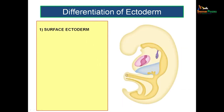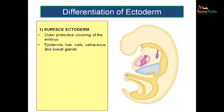Let us see what are the derivatives of surface ectoderm. Surface ectoderm gives rise to the epidermis, hair, nails, sebaceous and sweat glands, because this is actually forming a protective covering of the embryo. So all those structures which aid in the protection of the embryo will be derived from the surface ectoderm: the epidermis of the skin, the hair, the nails, sebaceous glands, and sweat glands.